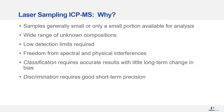Results of metals measurements are often used to assign a sample to a general class of materials or distinguish the sample from other samples in the same class. In classification, accurate results with little long-term change in bias are required. For discrimination, short-term precision is important.